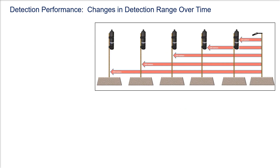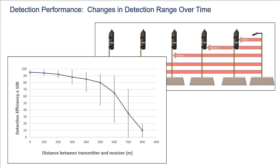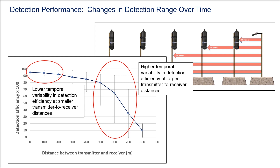Shown here is a typical setup for a long-term range test, often used to quantify detection range over time in a study area. The relationship between detection efficiency and transmitter-to-receiver distance is described by a curved shape. The further the distance between the tag and the receiver, the fewer of the tag's transmissions are detected. What is important here is the change in variability of detection efficiency with distance — not only do we typically see reduced detection efficiency with distance, we also see more variability in detection efficiency at larger distances related to changes in environmental conditions over time.